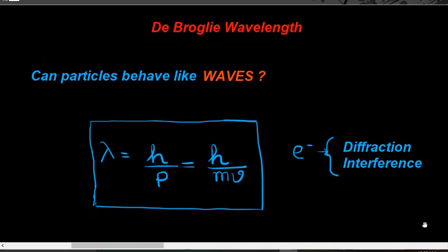A French scientist named De Broglie said that a particle can also behave like a wave. He also gave an expression for the wavelength, known as the De Broglie wavelength. The expression is very simple: any particle having mass M and velocity V has a wavelength given by λ = h/p, where p is the momentum and momentum equals MV. So the De Broglie wavelength equals Planck's constant divided by momentum.